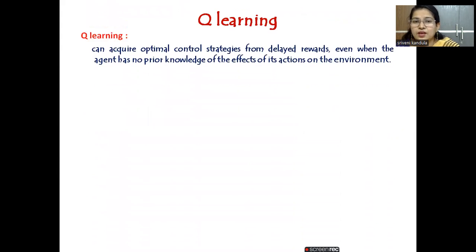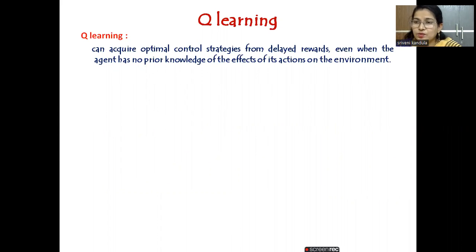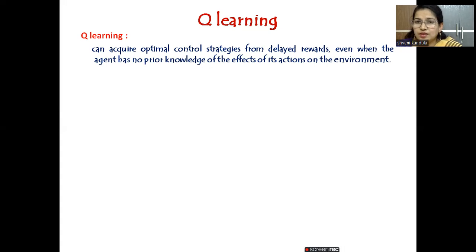In Q-learning, it has to acquire optimal control strategies from delayed rewards, even when the agent has no prior knowledge of the effects of actions on the environment. In reinforcement learning, the agent has no idea of the environment. If he performs a particular action, whether he will receive a reward or a penalty, he is not at all aware — he has to do it on a trial and error basis. An optimal control strategy has to be developed based on the actions he is performing.